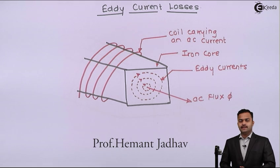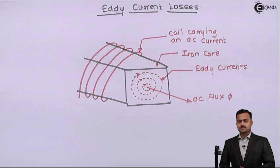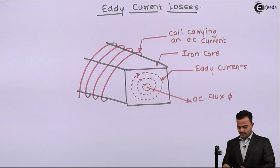Hello friends, in this video we are going to see a type of core losses which we call eddy current losses. The eddy current losses arise when an iron core has to carry AC flux.